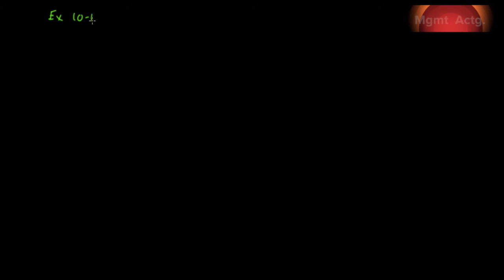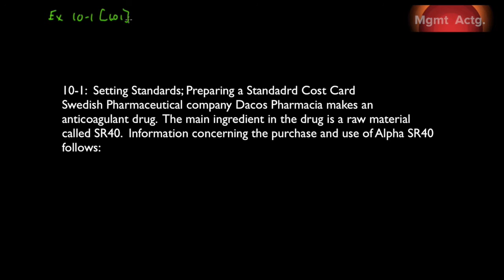Exercise 10.1. This will bring us through learning objective number one. Let's see what we have here. Setting standards and preparing a standard cost card. Swedish pharmaceutical company Davos Pharmacia makes an anticoagulant drug. The main ingredient in the drug is a raw material called Alpha SR40. Information concerning the purchase and use of Alpha SR40 follows.